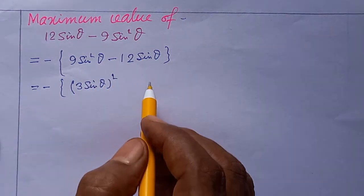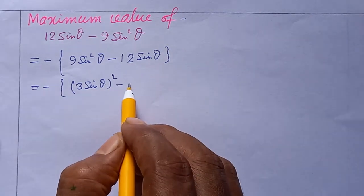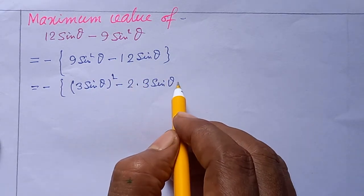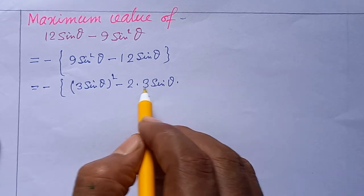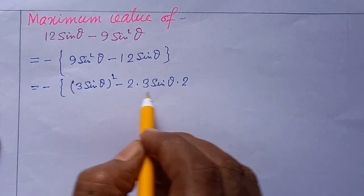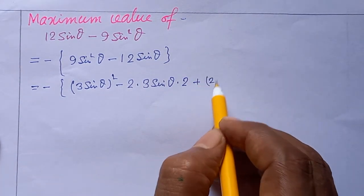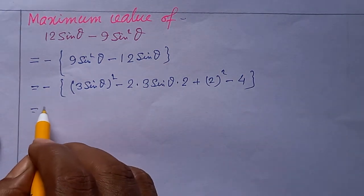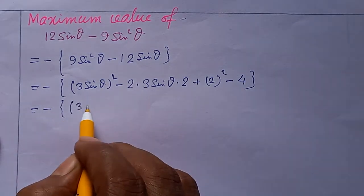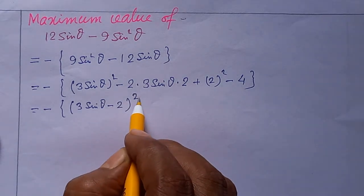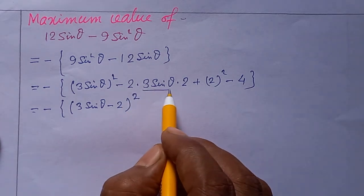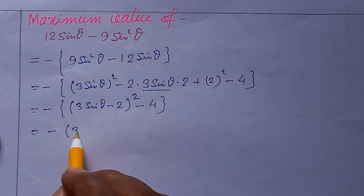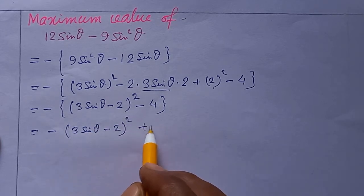We complete the square: the expression becomes -(3sinθ - 2)² + 4, using the identity a² - 2ab + b², ensuring the constant term -4 is correctly accounted for. This gives us minus (3sinθ - 2) whole square plus 4.